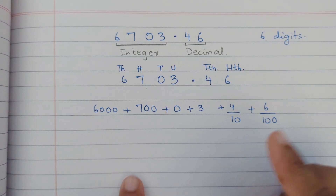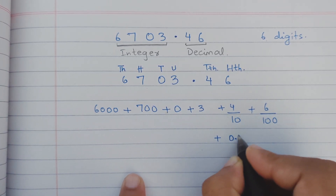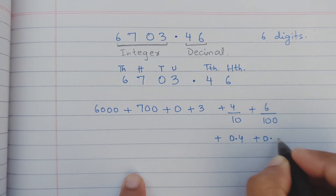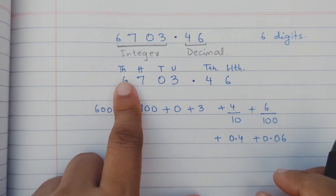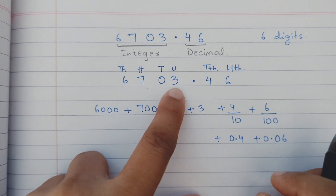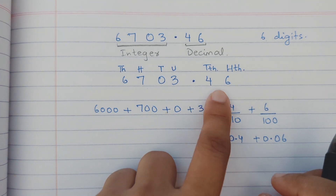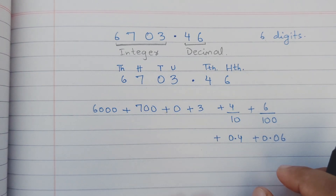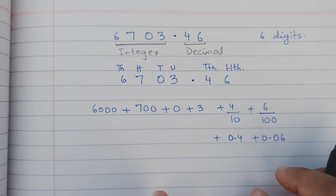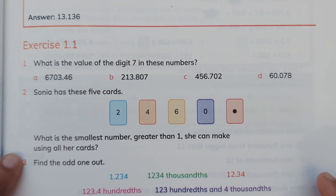We have already learned how to convert this fraction into a decimal, so we can write it as 0.4 and 0.06. So the number as a whole would be six thousand seven hundred and three point four six. We do not call it four tenths or six hundredths — we call every number after the decimal point in an individual capacity.